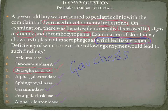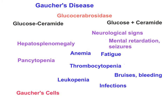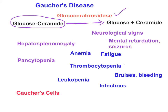Among all the lysosomal storage disorders, Gaucher's disease is the most common. Now let's look at Gaucher's disease in more detail. Gaucher's disease is caused by deficiency of the enzyme glucocerebrosidase, which participates in the breakdown of glucosylceramide — also called glucocerebroside. This molecule is ceramide with glucose attached.